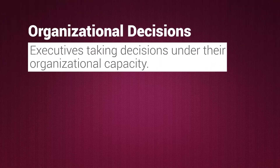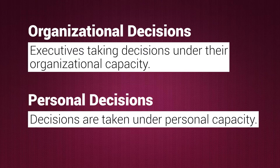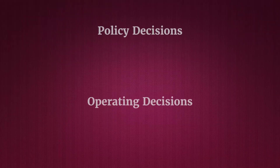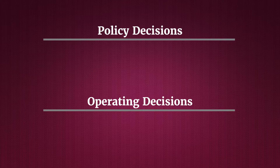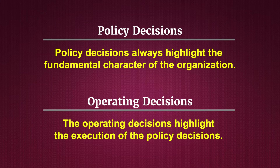Another type of decision is related to personal and organizational decisions. Organizational decisions are those where executives take decisions under their organizational capacity, while personal decisions are those taken under personal capacity. Another significant type is policy and operating decisions — policy decisions highlight the fundamental character of the organization, while operating decisions highlight the execution of those policy decisions. Apart from these, there are also individual and group decisions, based on the number of individuals involved in decision making.